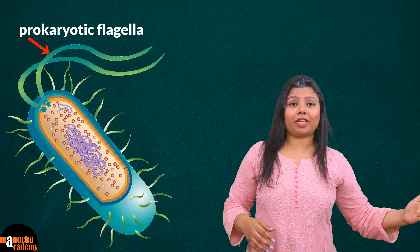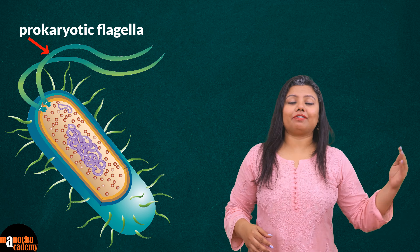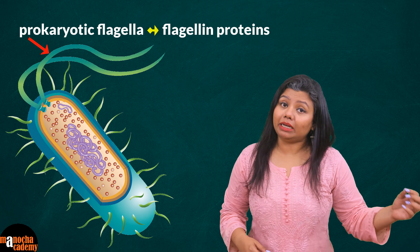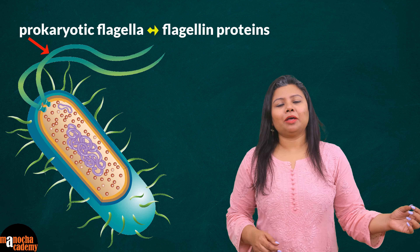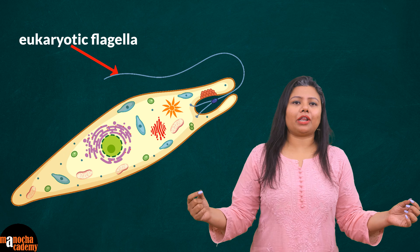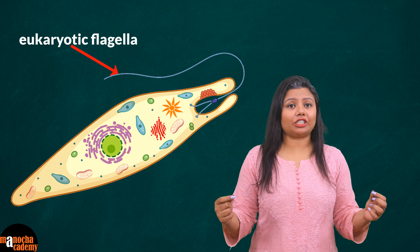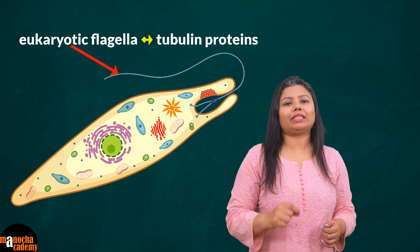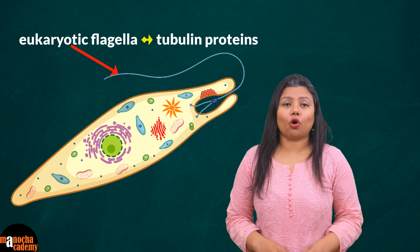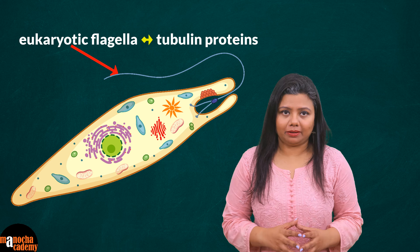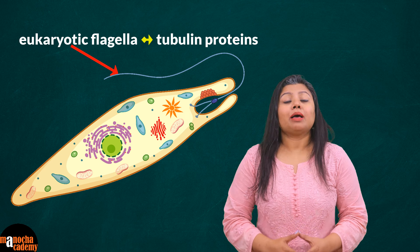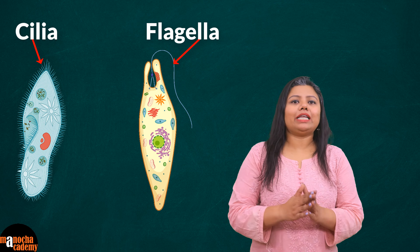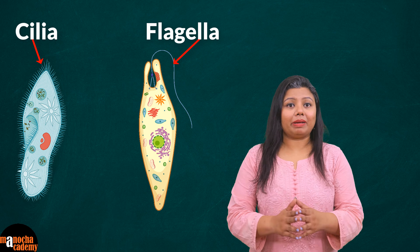In prokaryotic cells and eukaryotic cells, flagella differ in their structure. In prokaryotic cells, the flagella is made up of flagellin proteins, whereas in eukaryotic cells the flagella has a particular arrangement of a specific type of protein called tubulin. However, the overall structure of cilia and flagella remains the same.